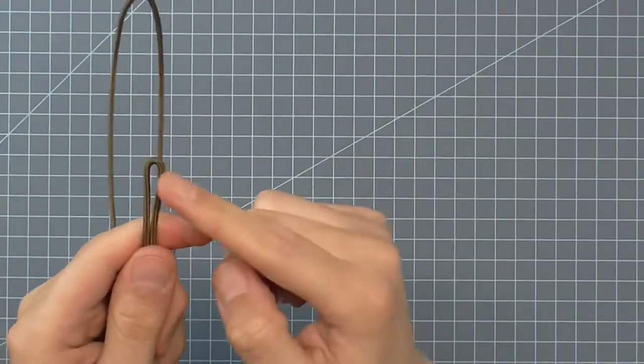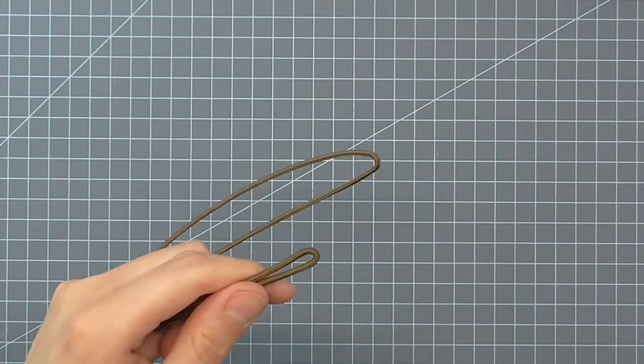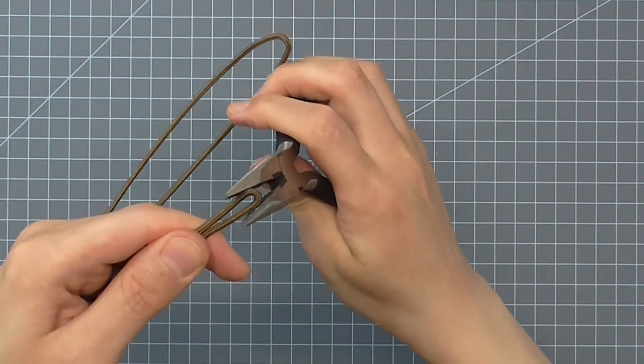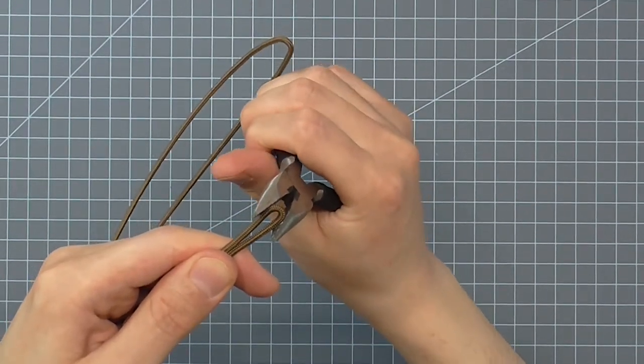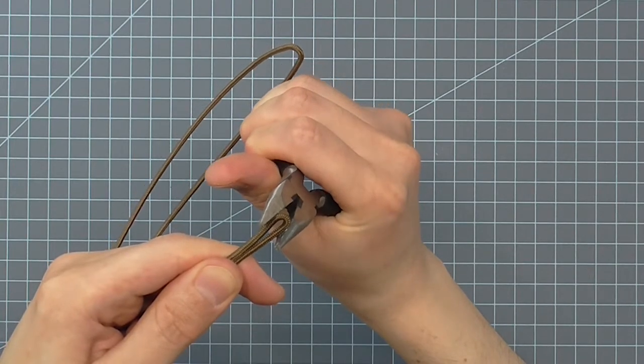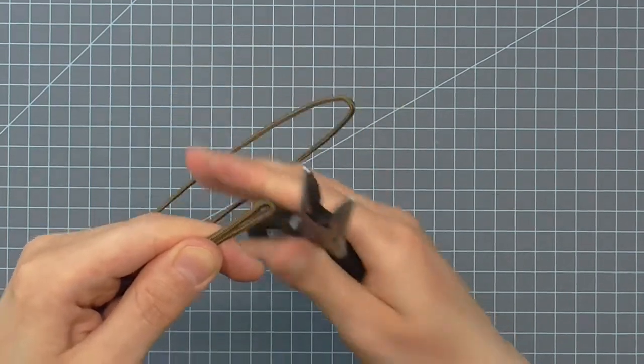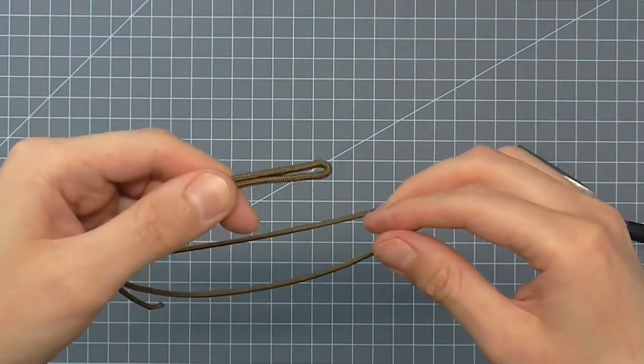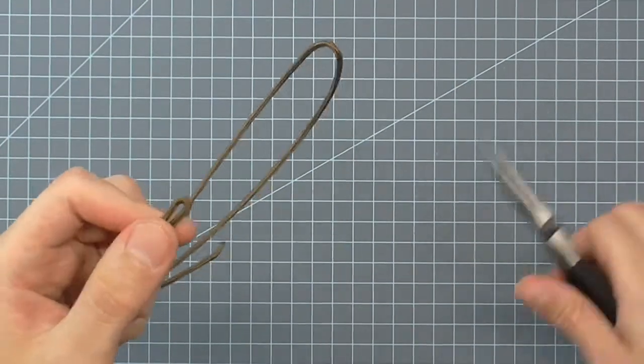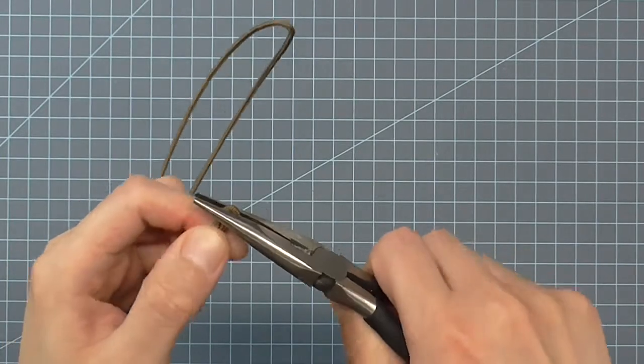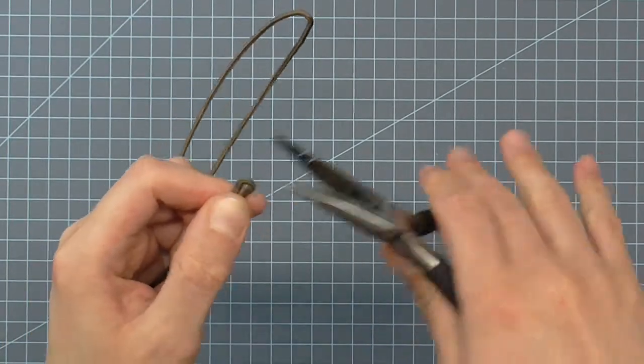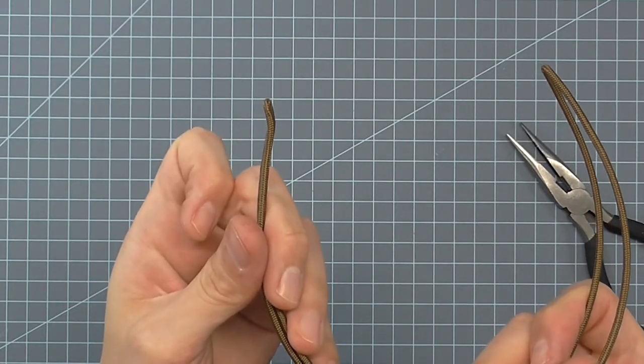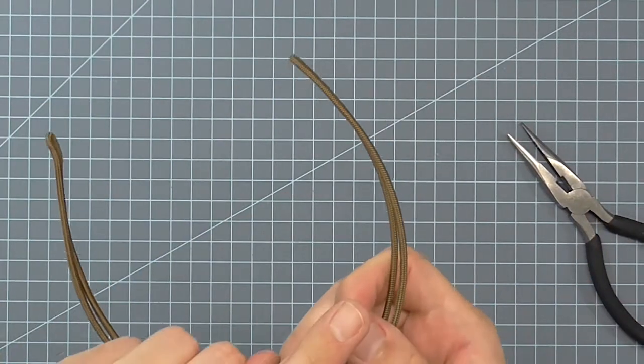Now that we have the ends as close as we can get them, take your needle nose pliers and carefully close that loop. This makes sure those two ends stay together at the bottom. Then I take the pliers and bend it out slightly at a small angle. This ensures that the end doesn't dig into the base of the skull as the band is worn.